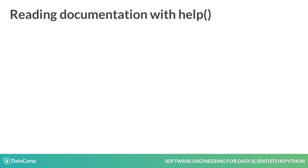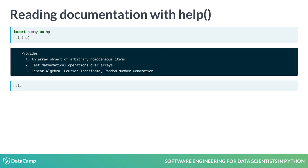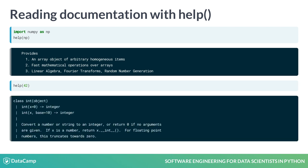We just saw that we can use help to see a method's documentation. But we can also call help on any object in Python. We can call help on the numpy package to see some high-level documentation on what functionality it provides. And here, we call help on a number. From the output, we can read up on Python's integer class.